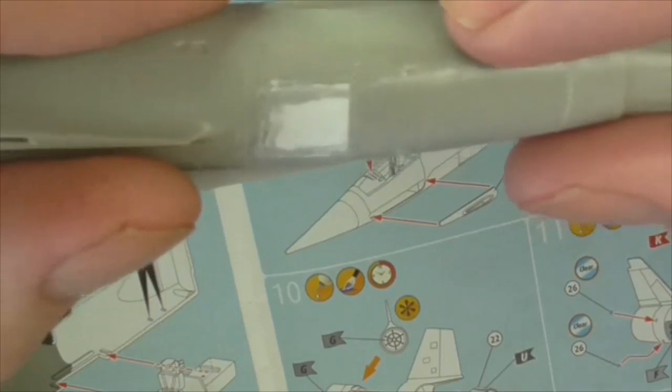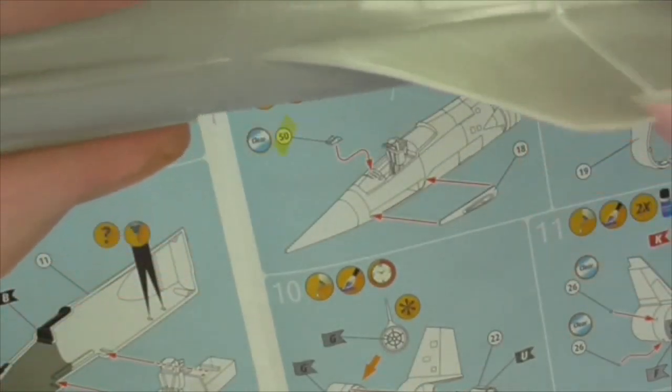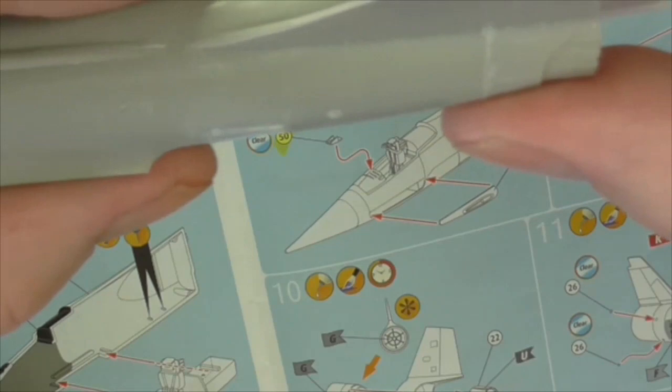It might just be a case of putting more filler in and just smooth it all out and hope that you've got the panel shape when it's all been primed and painted. I might go down that road if this smoothing out these joints doesn't work.